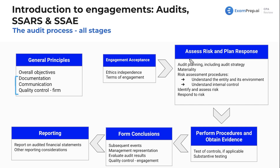Then we move on to the assess risk and plan response phase — really just the planning stage. This includes the audit planning and the audit strategy. We'll discuss the actual meetings you have and what you need to consider. We also talk about materiality, which is a big topic with its own lesson. We'll determine materiality, and it's fine if materiality changes throughout the audit.